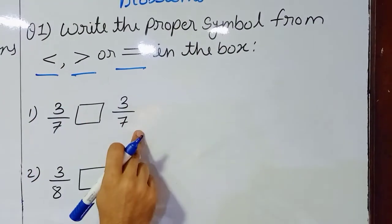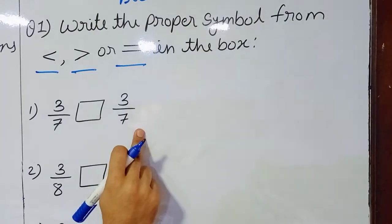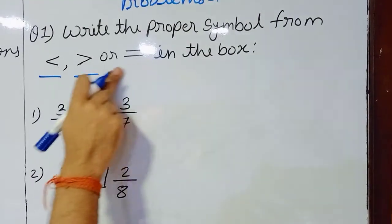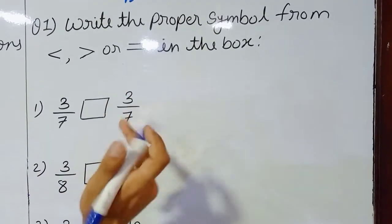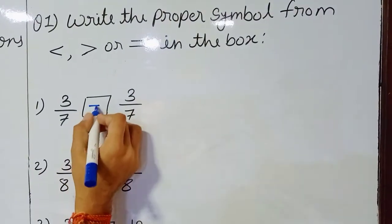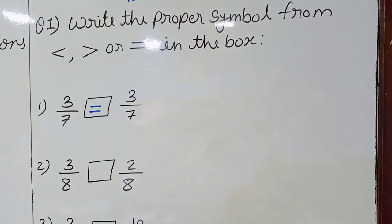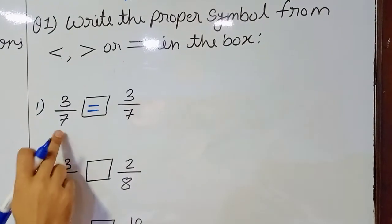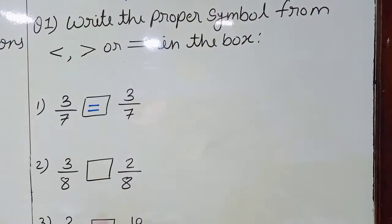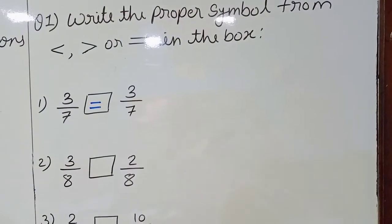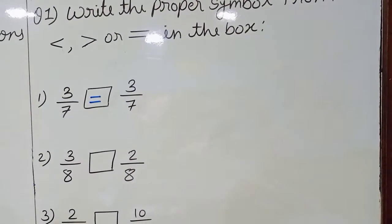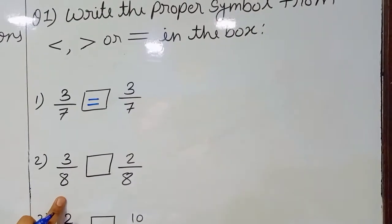Come to the first one: 3 upon 7 and 3 upon 7. You should easily recognize that these two fractions are equal — the value of these two fractions should be the same. Come to the next one, number two.